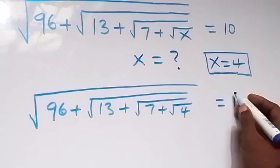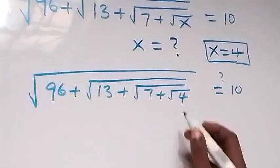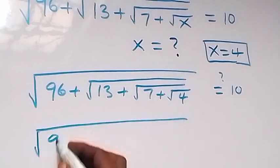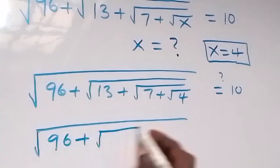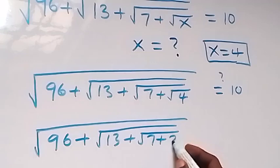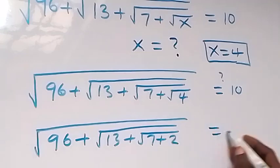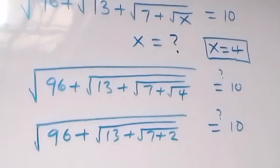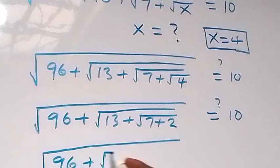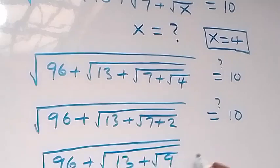Now this equals to 10, and here root 4 is 2. Then this will become root 96 plus root 7 plus 2, and is this equals to 10? Then 7 plus 2 is 9, and we have square root of 96 plus square root of 13 plus square root of 9, and is this equals to 10?